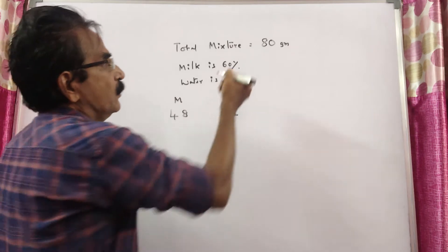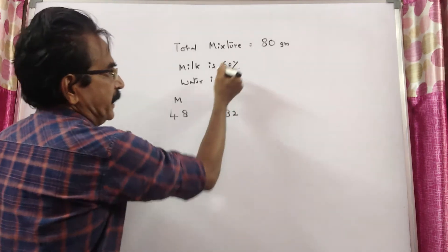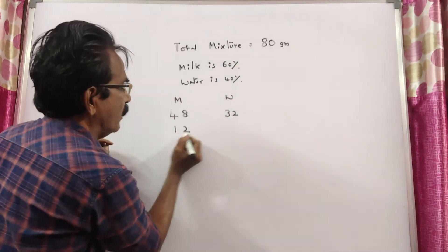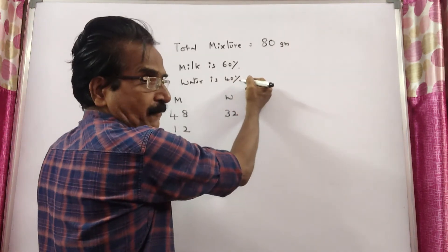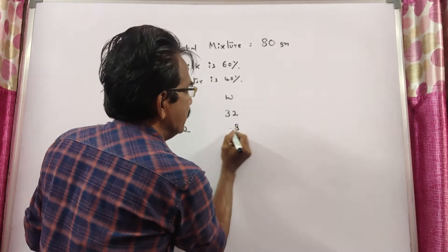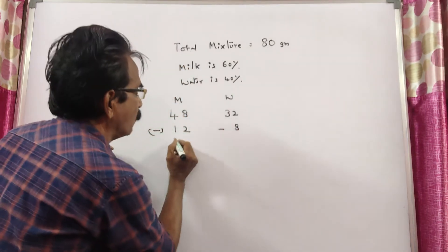20 grams is taken out. Now, 60 percent of 20: 6 times 2 equals 12 grams of milk will come out, and 40 percent of 20: 4 times 2 equals 8 grams of water will come out.